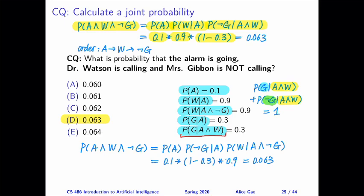For the other ordering, it's quite similar. So the other possible ordering is, again, A first, because we have to choose A first, and then say not G next, and finally W.